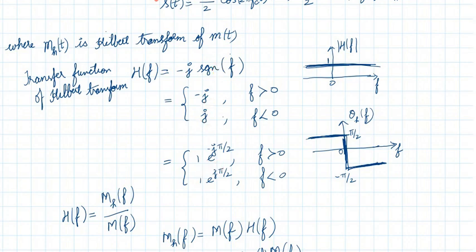We can express H(f) in polar form. For positive frequency: the magnitude of −j is 1, and the angle is −π/2, so H(f) = e^(−jπ/2). For negative frequency: the magnitude of j is 1, and the angle is +π/2, so H(f) = e^(jπ/2).